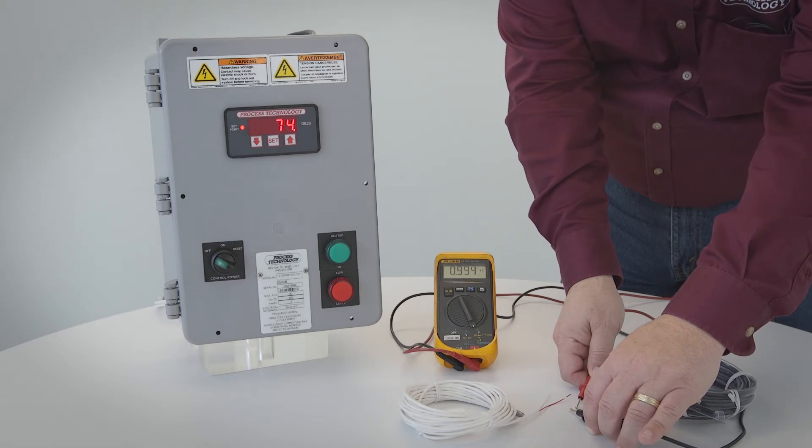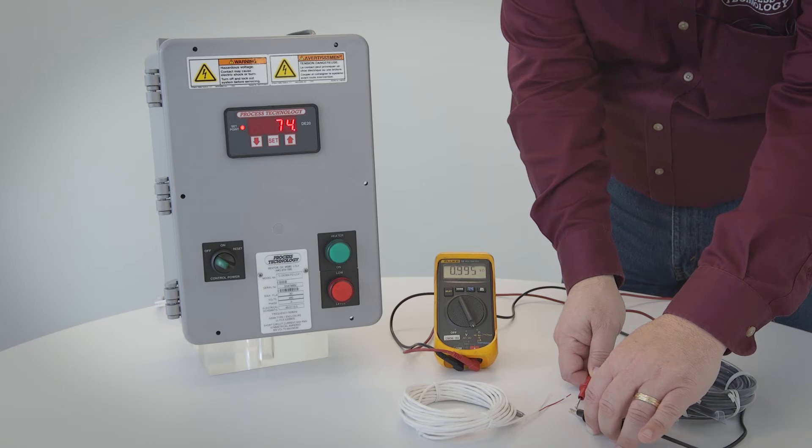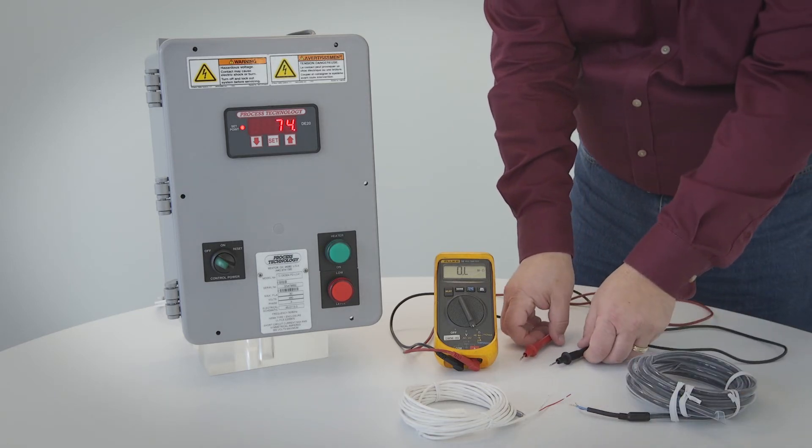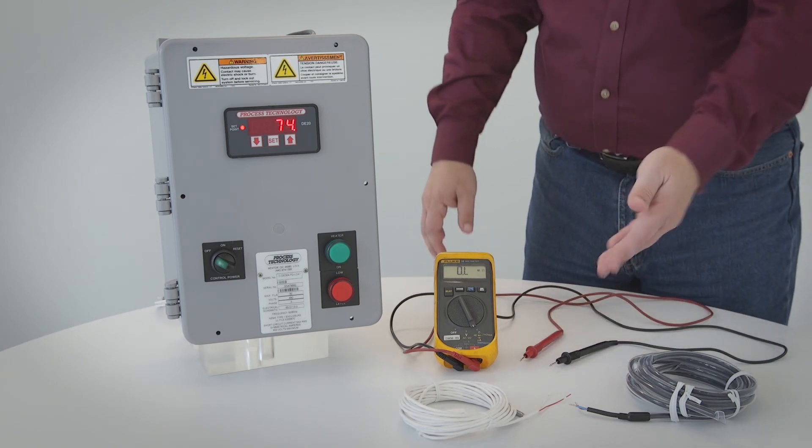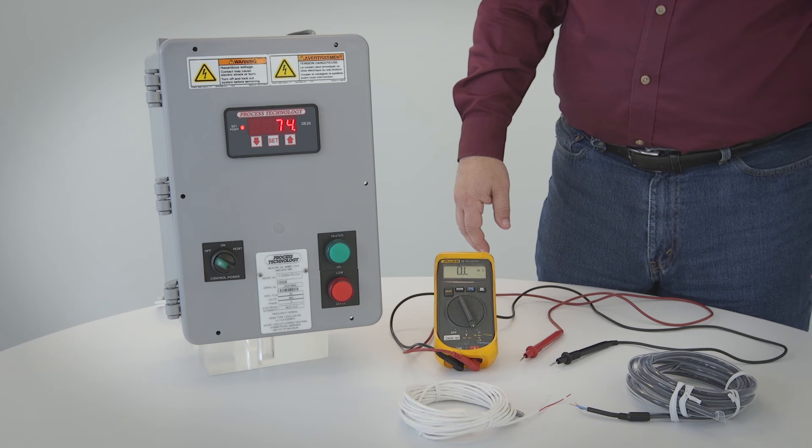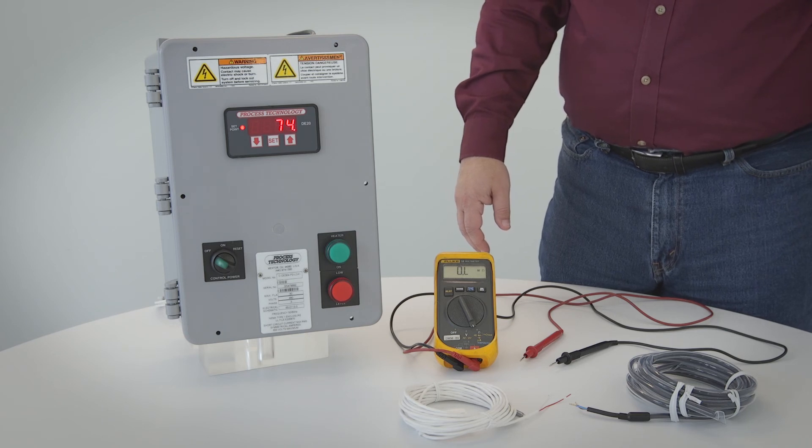Don't get concerned about the exact number. Just see that the measurement is around the expected value and that the reading is a nice steady number. A resistance measurement that is very far off or a measurement that is erratic indicates a bad sensor. Then the temperature sensor should be replaced.